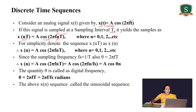For simplicity we can denote the sequence x(nT) as x(n), because here only n is the variable — T is the fixed time interval. Since T is fixed we can ignore it and denote the discrete time sequence as x(n).